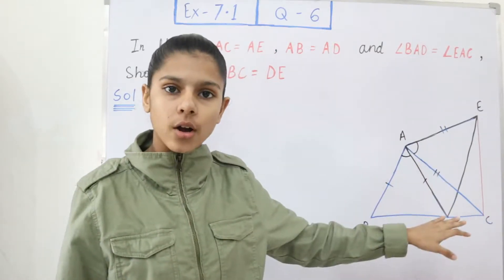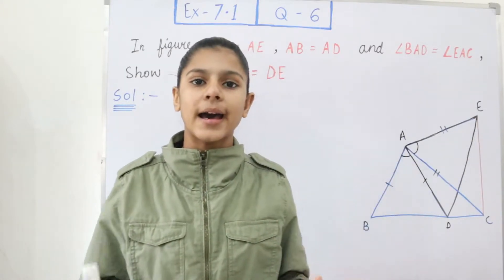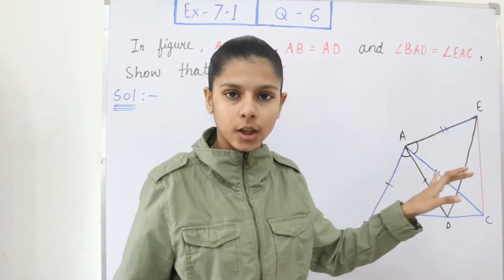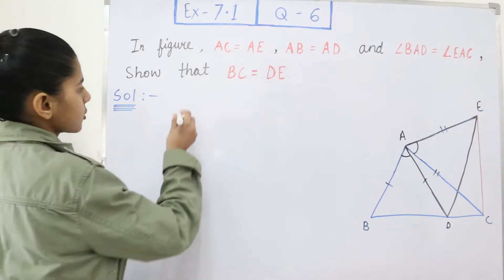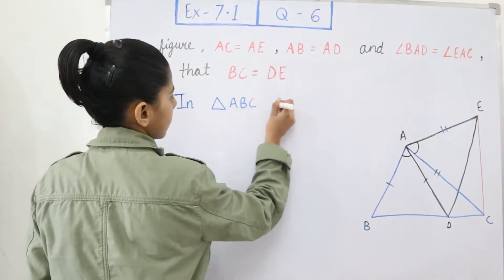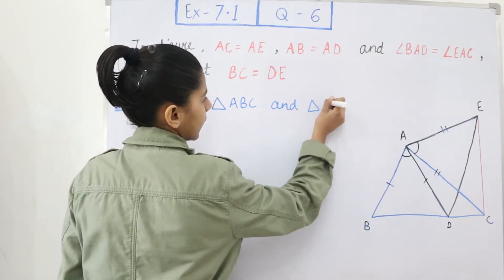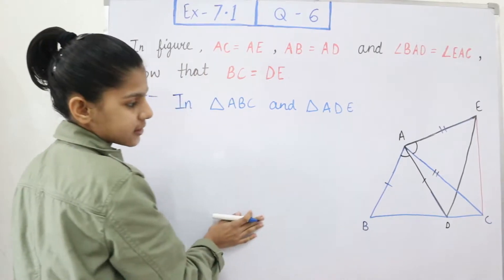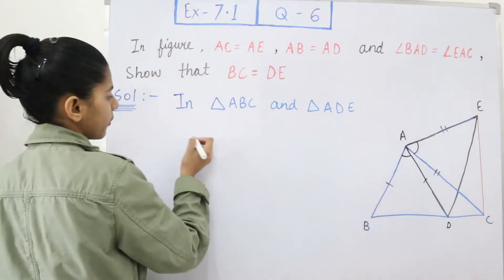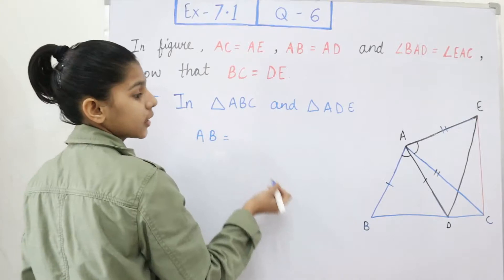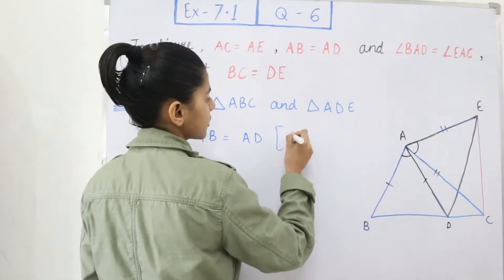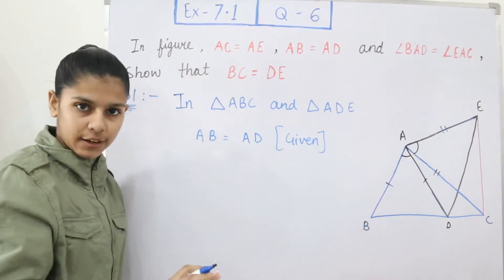When we prove both triangles congruent, BC will automatically be equal to DE by CPCT. So let's start the solution. In triangle ABC and triangle ADE, it is given that AB is equal to AD. So one side is equal — reason: given.